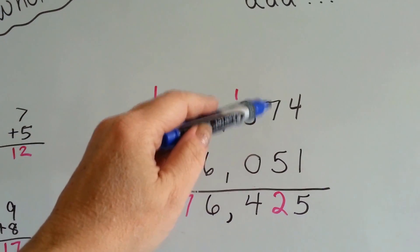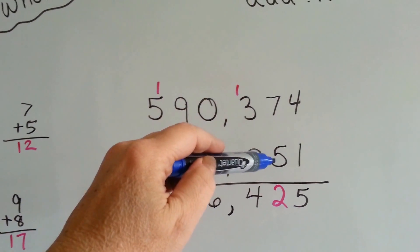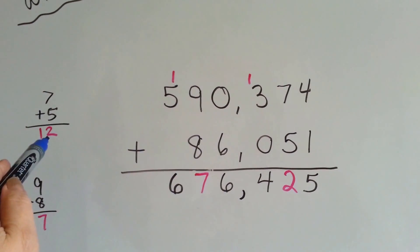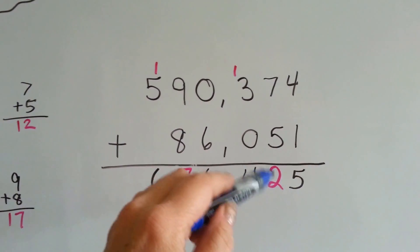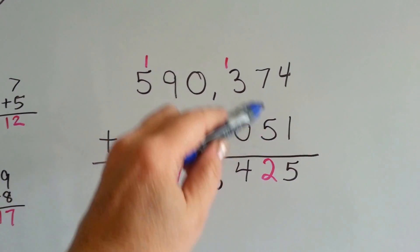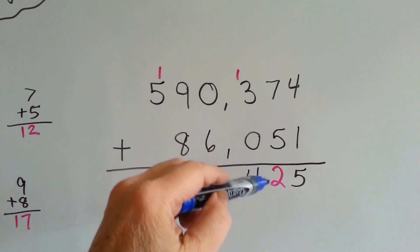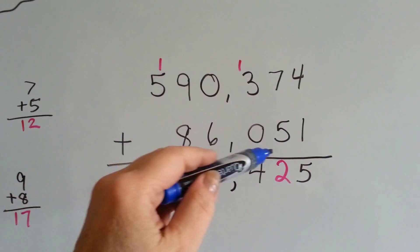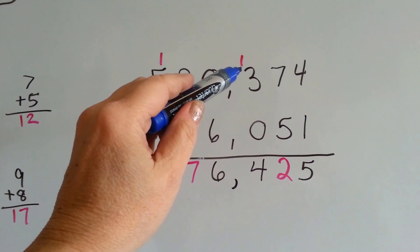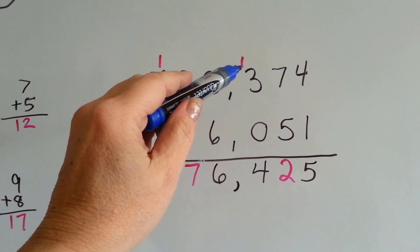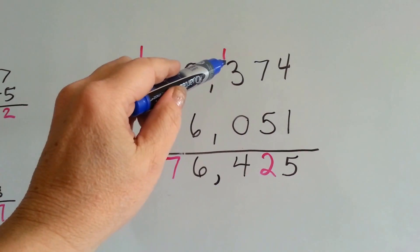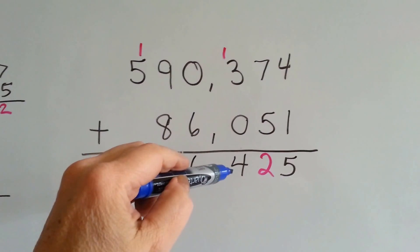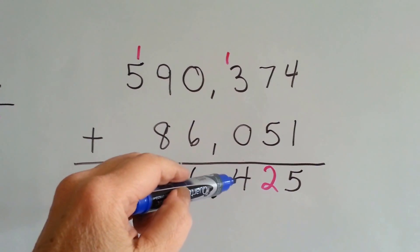Now we're going to add the tens column: 7 plus 5. Well, 7 plus 5 is 12, and we can't write the 12 here, so we have to regroup and put the 1 up here and the 2 down here. The 1 goes to the next column — we carry it over to the hundreds column — and 3 plus 1 is 4, and we write the 4 down here.